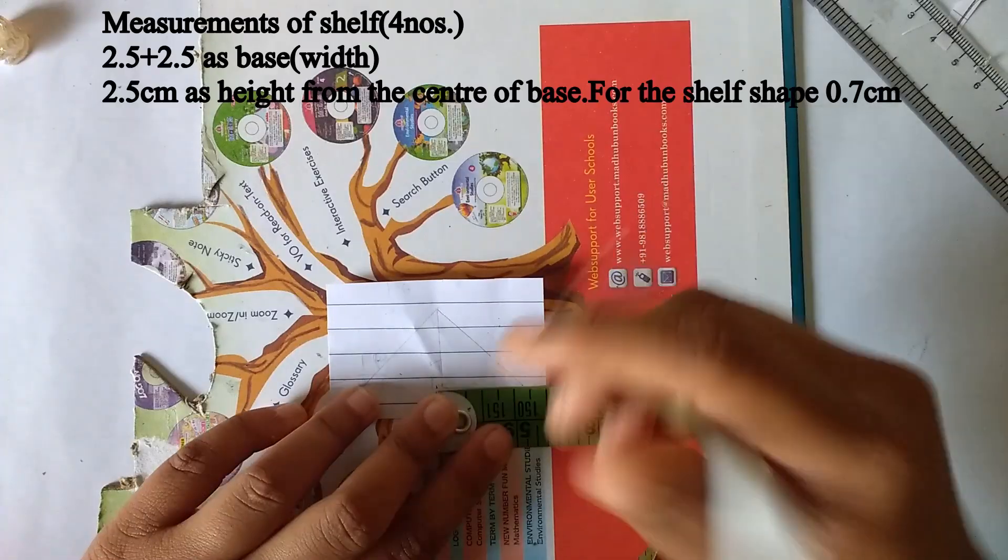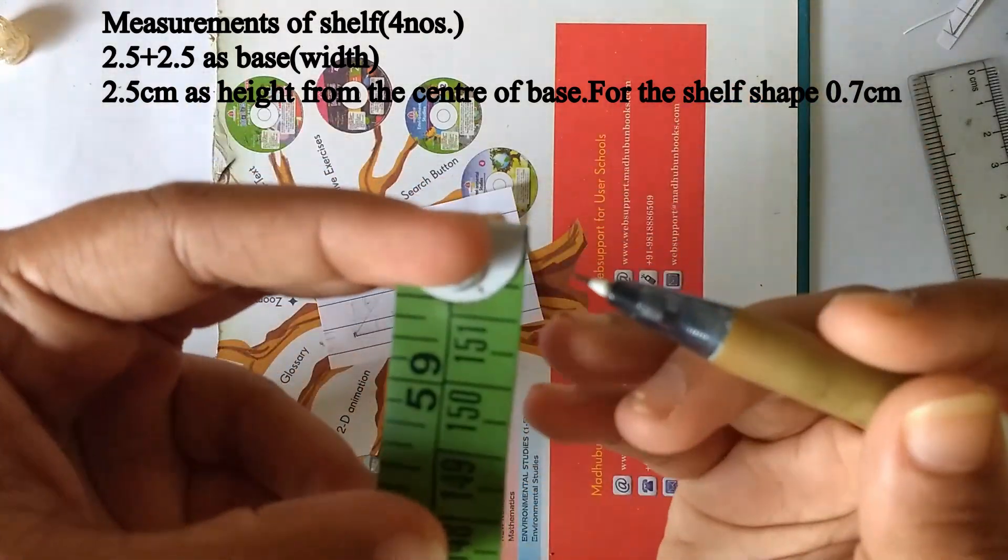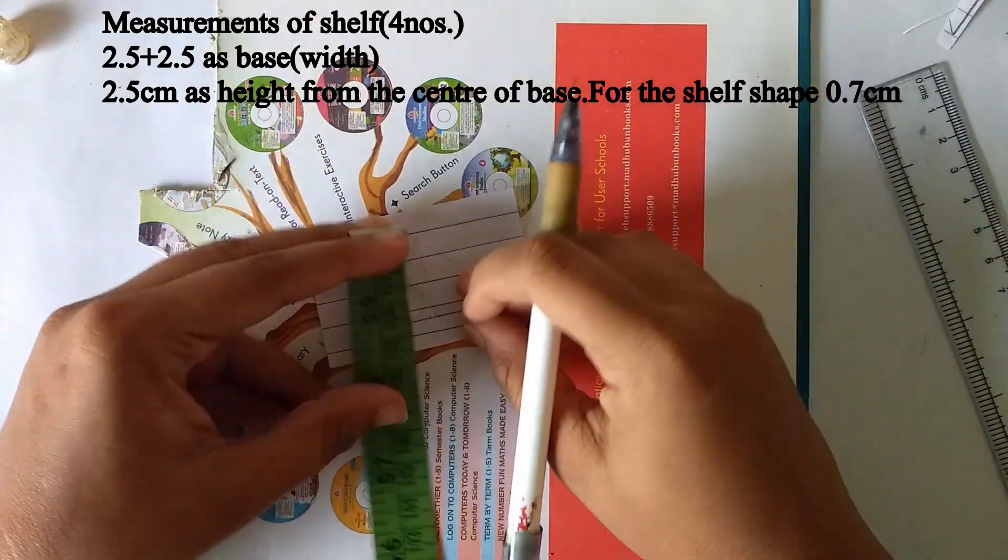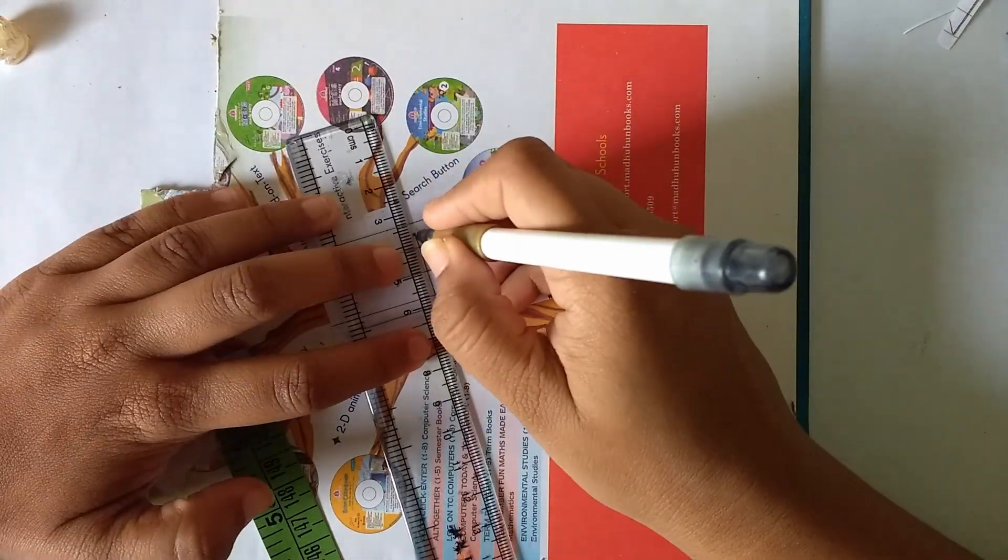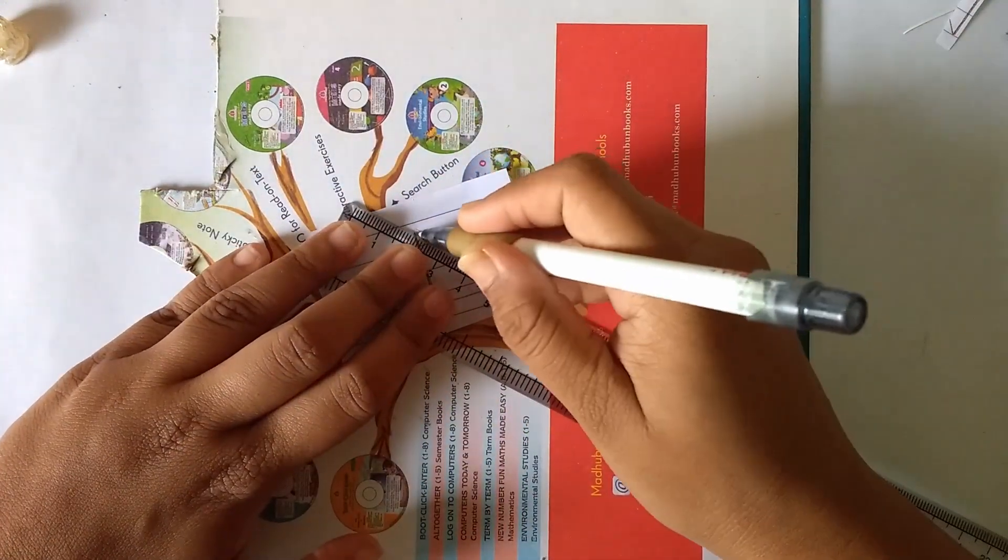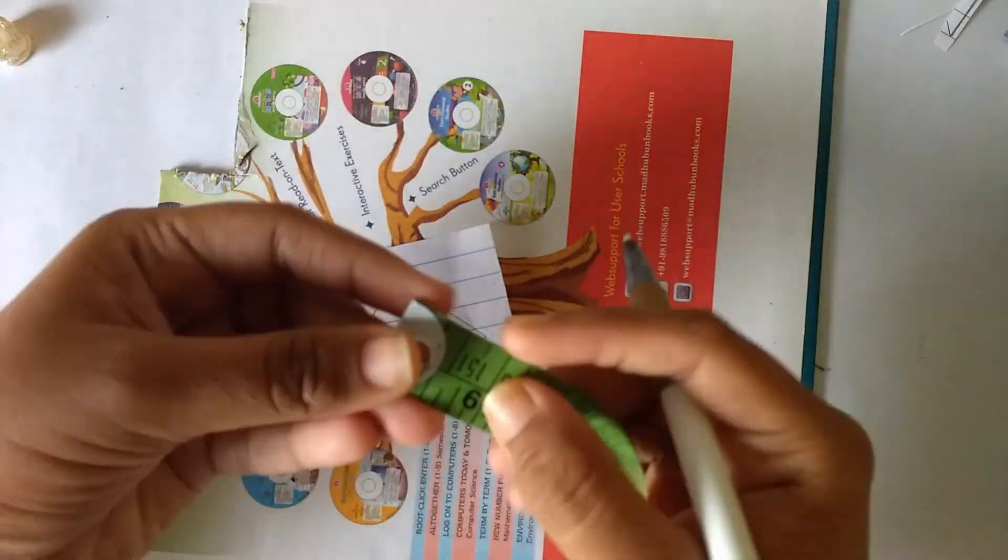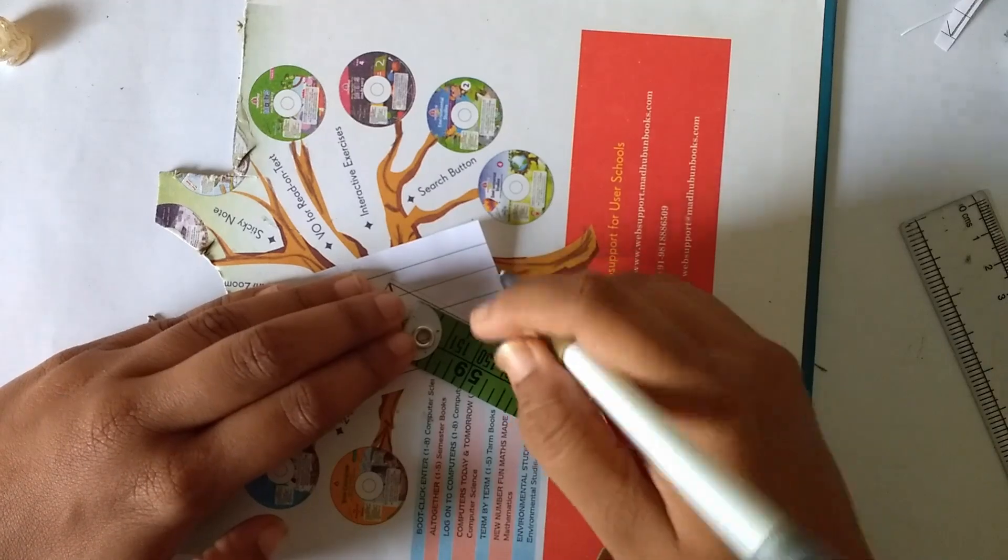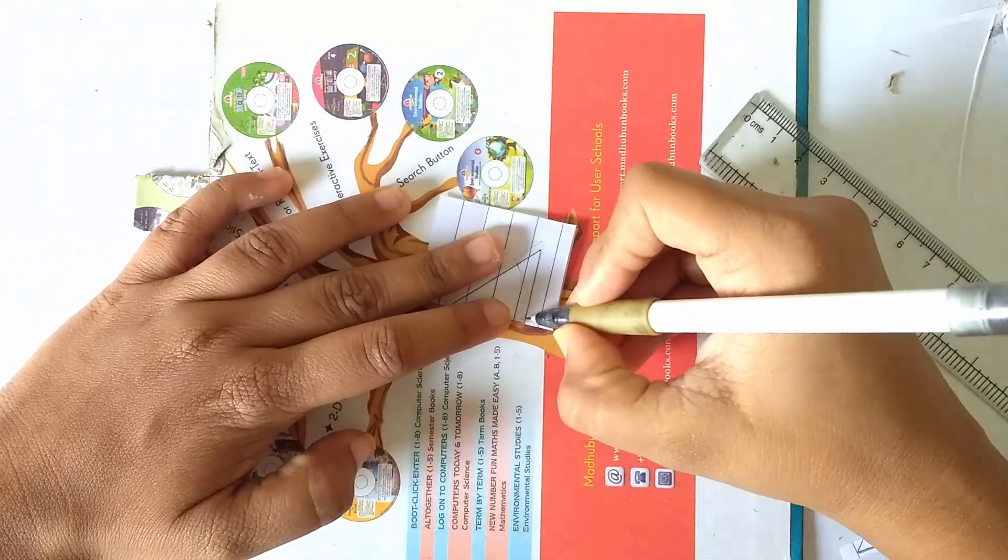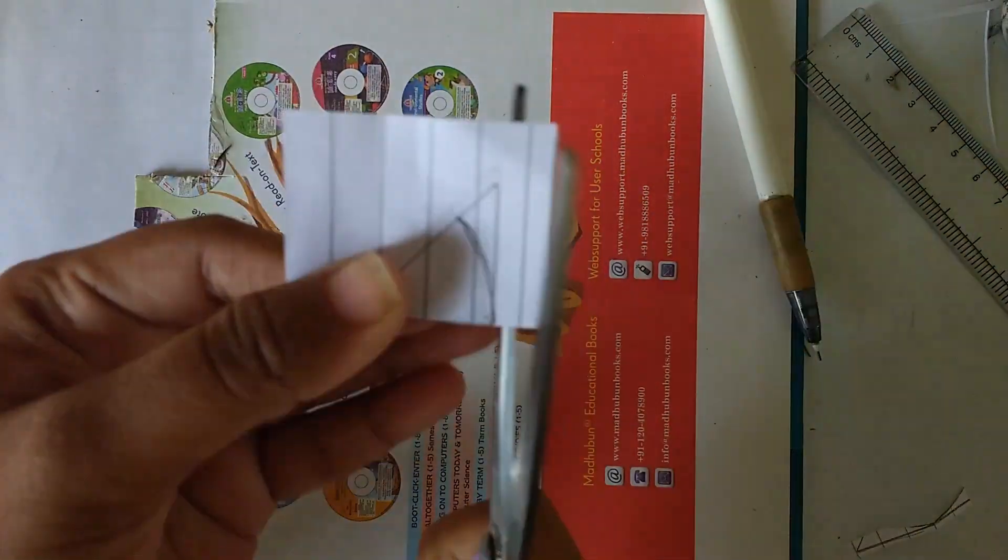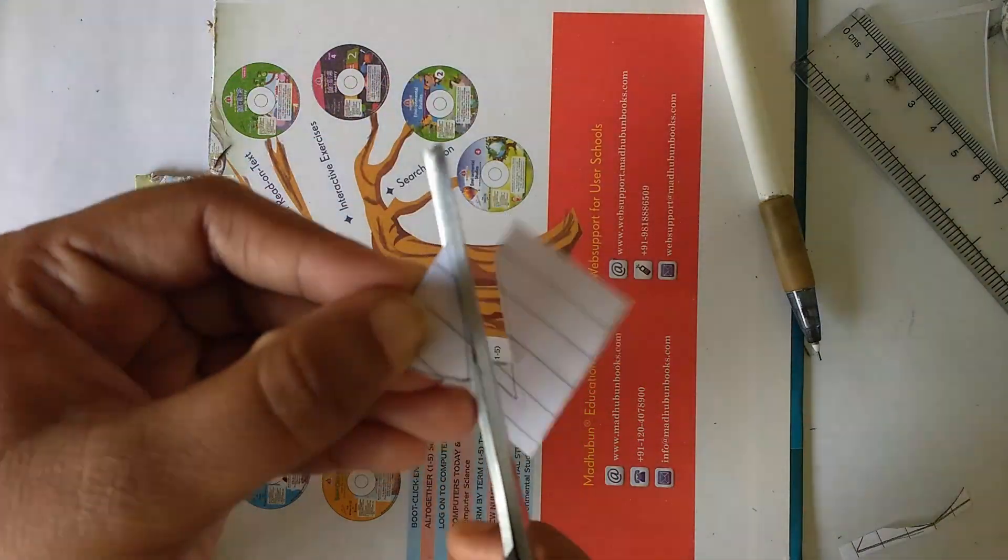While doing the bookshelf, the half side is 2.5 centimeters and the other half side is 2.5 centimeters. From the center of your 5 centimeters, take 2.5 centimeters towards the top and join the lines. From the bottom of the 2.5 centimeters, take around 0.7 centimeters and draw a curve. Do it on a brown paper or normal base paper material so you won't damage your main material when you need to do any adjustments.